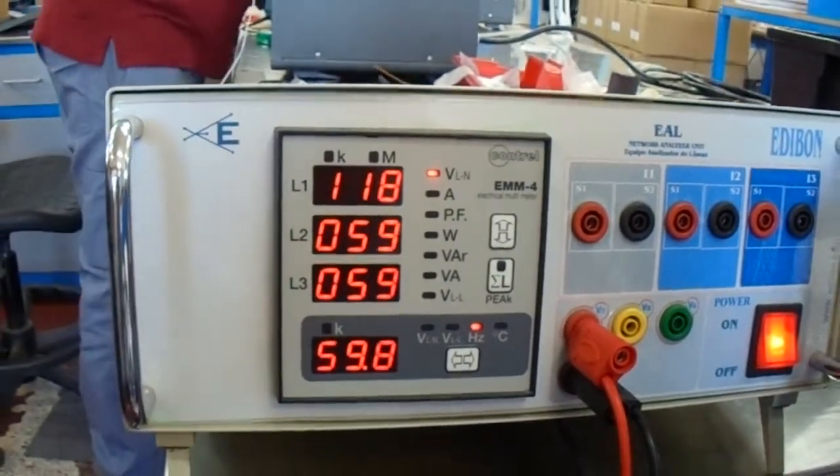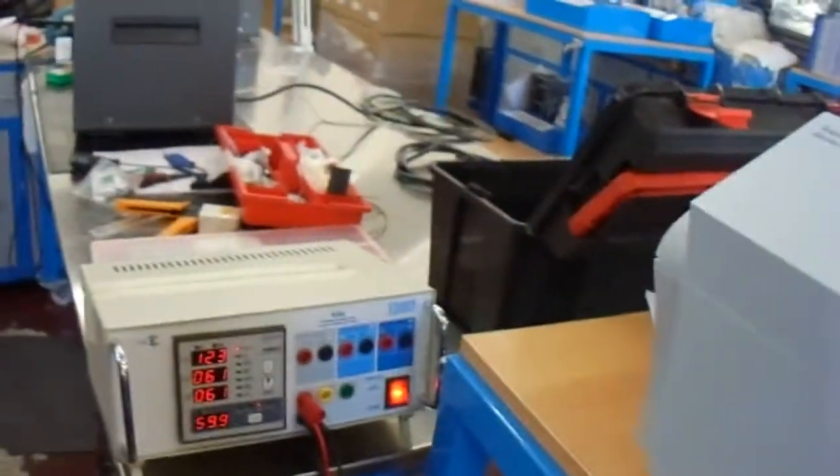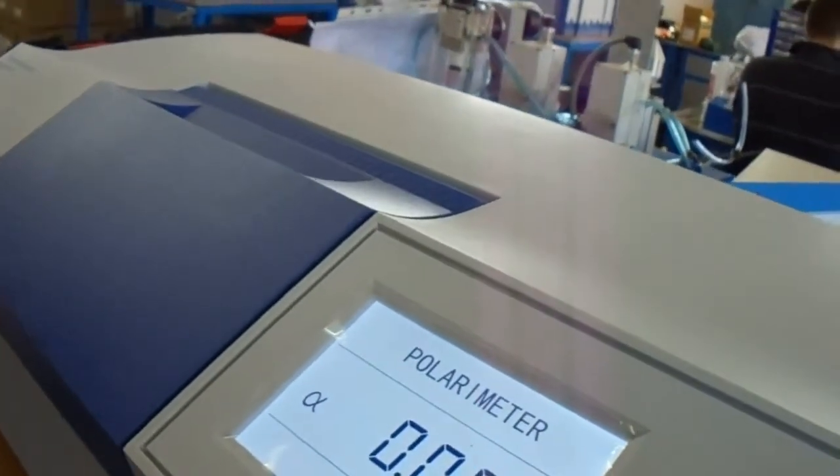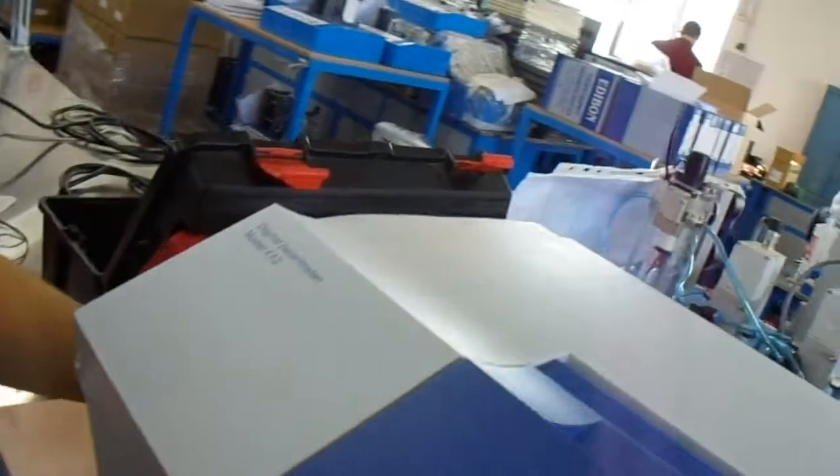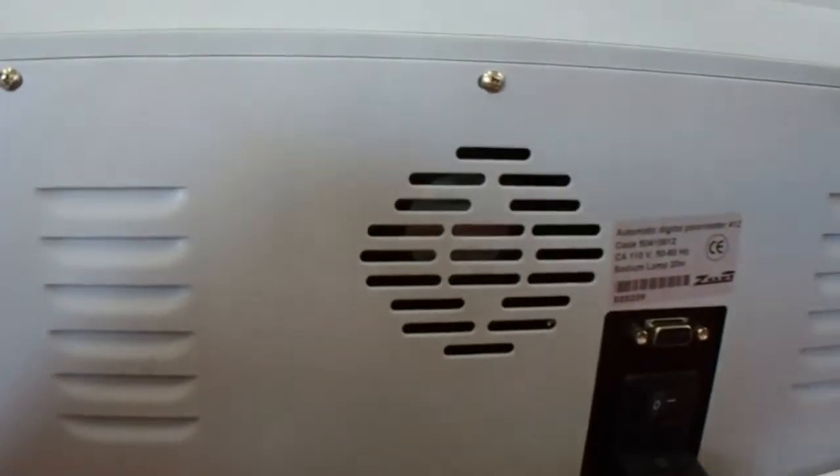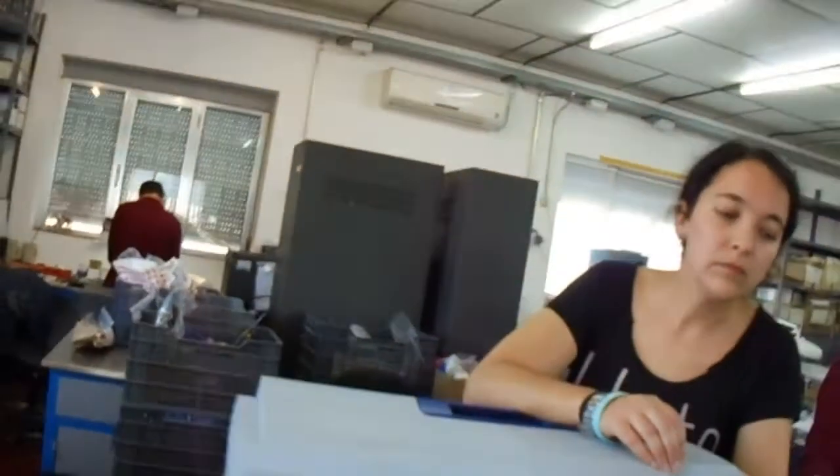After having the electrical supply ready, we have to turn on our polarimeter by clicking the button at the back. Okay, just this button, and then the polarimeter will be ready to work.